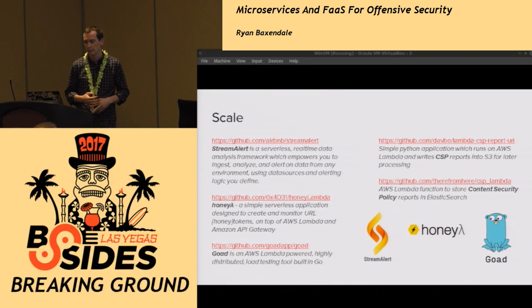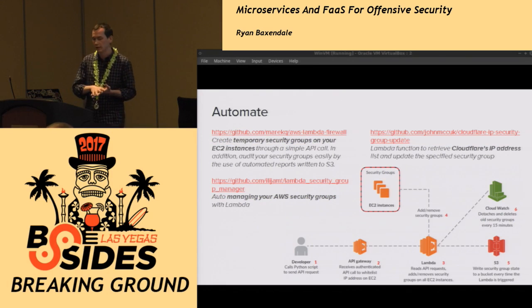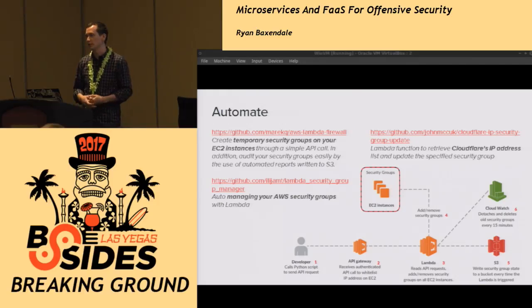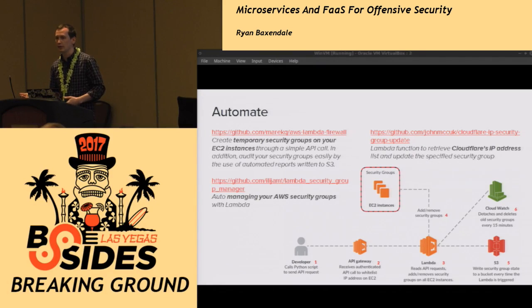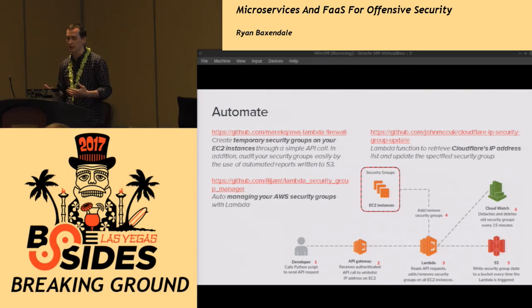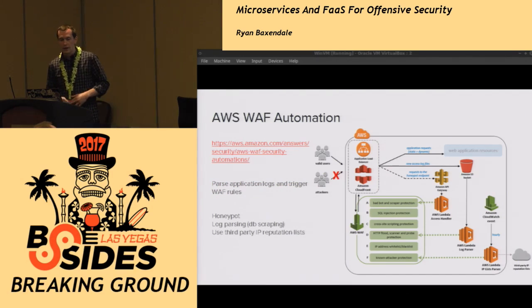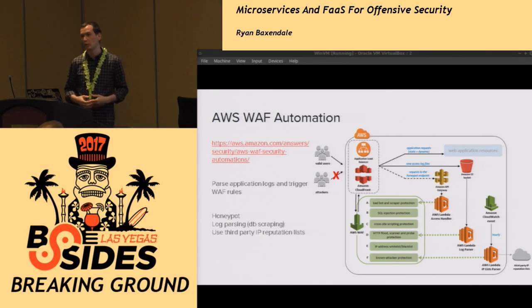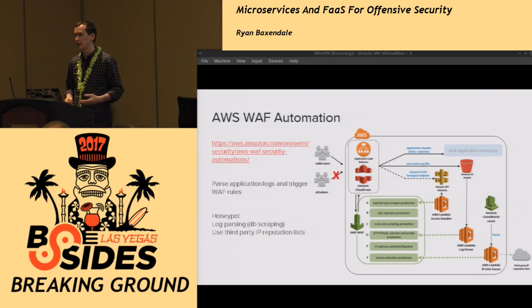There have been quite a few related projects with Lambda. One is automating EC2 firewall rules — maybe a developer hits an API endpoint that triggers a Lambda function to change the security groups so the developer can log in. You could also monitor a CDN network, automatically updating Cloudflare's server list into your web server's security groups. Recently AWS came out with their Web Application Firewall, tied together with Lambda to parse WAF logs, detect abuse, and automatically blacklist an IP address or kick out a user.